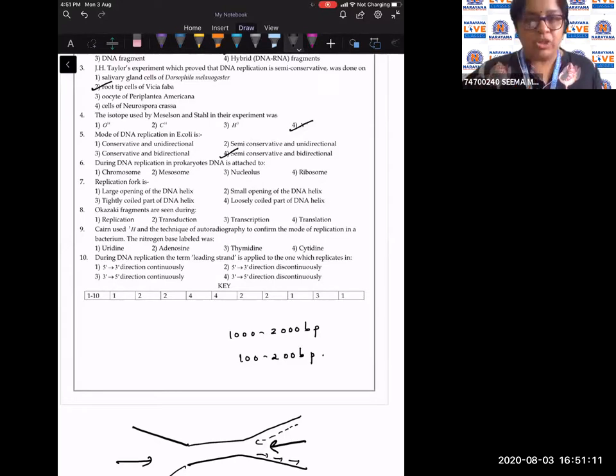During DNA replication in prokaryotes, DNA is attached to a structure which is called the mesosomes, which helps in the division of the daughter DNA molecules.